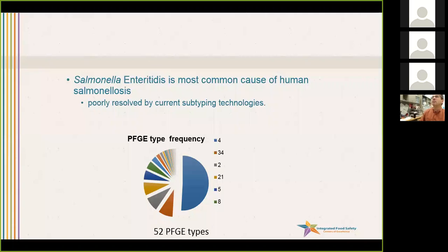Another area where whole genome sequencing will have a major impact — and a lot of our examples are derived from — is Salmonella enteritidis. If you look at most of the data, it suggests that about 50% of Salmonella enteritidis are the same PFGE type, but with whole genome sequencing we can split those PFGE types into different subgroups, identify clusters, and hopefully detect and identify more outbreaks.